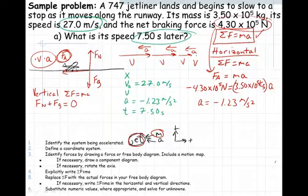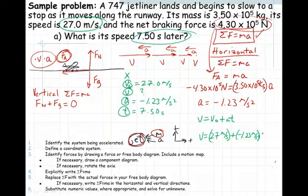So we have to find an equation that has our three variables that we know, plus the one that we're looking for, which will be our final velocity. The appropriate equation would be v equals v initial plus at. We plug our values in: 27 meters per second for the initial velocity, plus an acceleration of negative 1.23 meters per second squared, times a time of 7.50 seconds. That gives me a velocity of 17.8 meters per second.